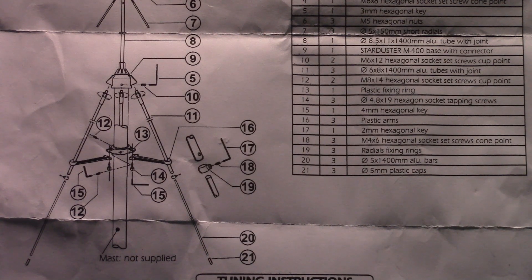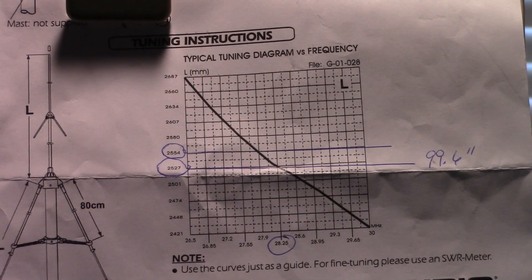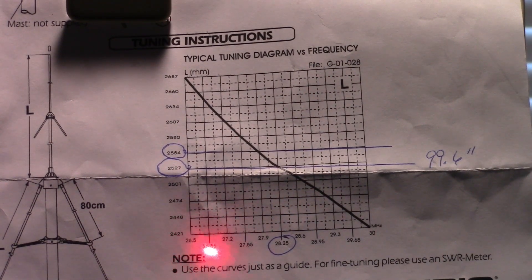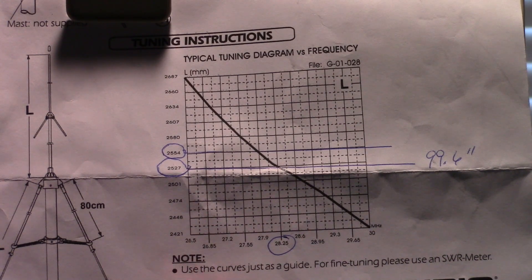Something else I wanted to point out that's part of the instruction sheet here. I told you about this graph, and this is important when you're doing the tuning of your antenna. This graph here, you've got your X and Y axis. Across the bottom, it's the frequency range of the radio which runs from 26.5 megahertz up to 30 megahertz. Then you've got this column here which is the length of your radiators on the antenna, and that's in millimeters.